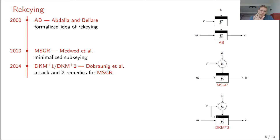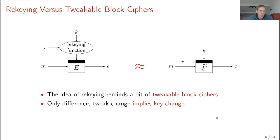If you think about re-keying in a broader sense and tweakable block ciphers in a broader sense, you might conclude that they somehow share ideas. Intuitively, a re-keying function is really comparable to a tweakable block cipher — the interface is the same, the goal is the same, and they both can be used to do block encryption.